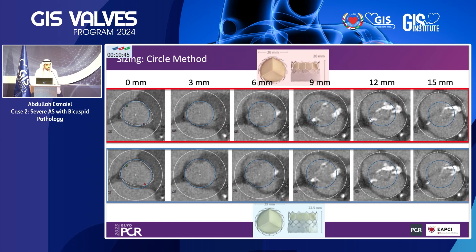The circle method is only applicable with a balloon expandable valve — you cannot use it with a self-expandable valve. You trace the annulus, size your valve, say a 26, then place two circles in your software — a 26 and one size smaller, a 23 — and project them from the LVOT all the way to the STJ. You assess the interaction with the leaflet, the raphae, the STJ, and the coronaries. The valve with the least interaction is the preferred size.